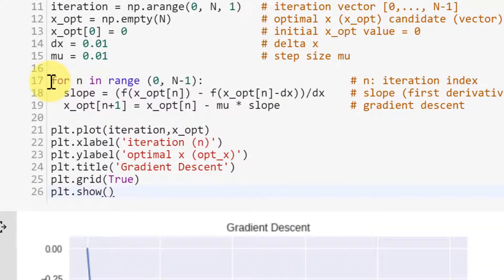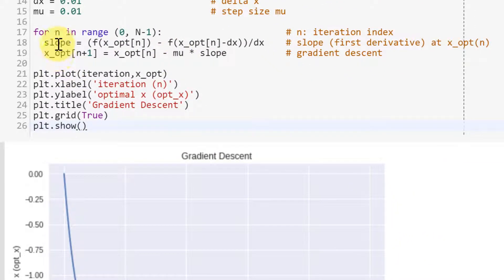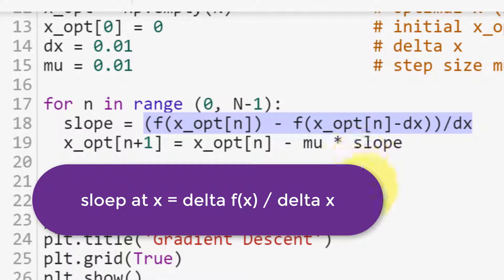Now we have a for loop here, and this lowercase n is iteration index. And that goes from 0 up to N minus 2, because this upper limit is not included. And slope at this point, x_opt of n can be defined as delta f over delta x.